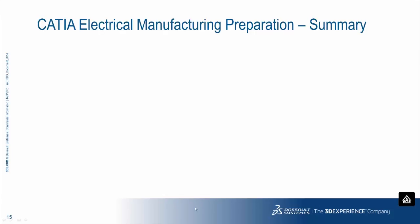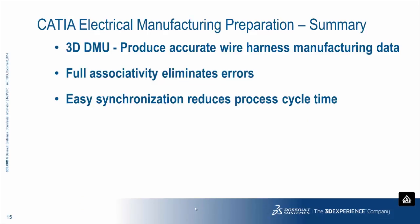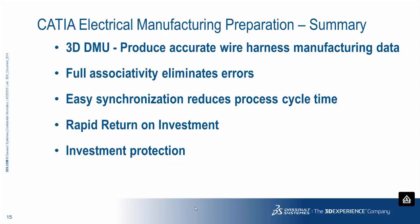Some key points in summary for CATIA Electrical Manufacturing Preparation: the use of 3D DMU information makes it very easy to quickly produce accurate wire harness manufacturing data, including all manufacturing documentation and detailed form board design and layout. There's full associativity between the 3D and manufacturing documentation, and it provides an easy and safe modification process that eliminates errors. There's also easy synchronization between the harness 3D design and the flattened manufacturing representation, reducing process cycle time. There is a rapid return on investment through immediate improved productivity, elimination of physical harness mockups, and improved quality of manufacturing information. Lastly, you have investment protection with the ability to integrate wire harness design and manufacturing processes with next generation systems engineering tools and methodologies.